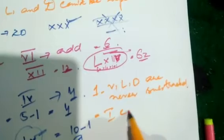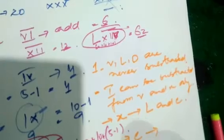Remember these subtraction constraints: I can only be subtracted from V and X. X can only be subtracted from L and C. And C can only be subtracted from D and M. These are important rules to keep in mind.